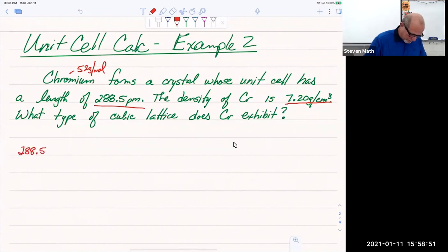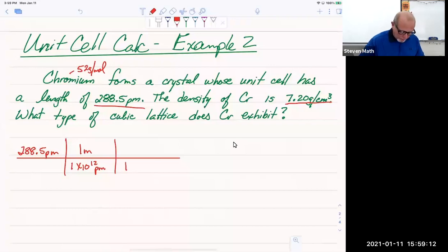288.5 picometers. There's 10 to the positive 12th picometers and one meter and one meter has 100 centimeters. So munch them, crunch them. I get a length of my unit cell as 2.885 times 10 to the negative eighth centimeters. That's going to be L.